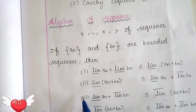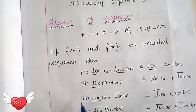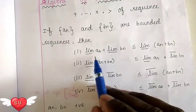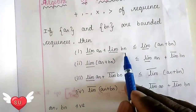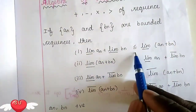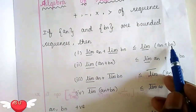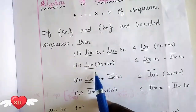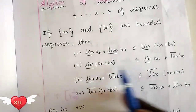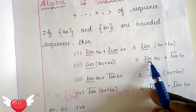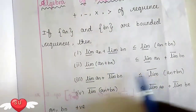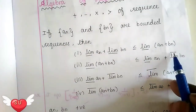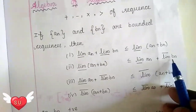If an and bn are bounded, we have four types of points. The limit of an plus limit of bn is less than or equal to the limit of an plus bn. This gives us a lower bound: limit of an lower bound plus limit of bn upper bound.